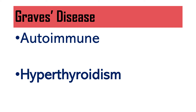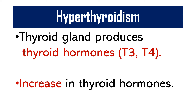Graves disease is an autoimmune condition that causes hyperthyroidism. The thyroid gland produces the hormones T3 and T4. Hyperthyroidism, as the name implies, involves hyper or increase in the production of the thyroid hormones.